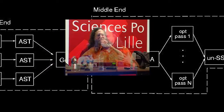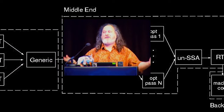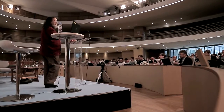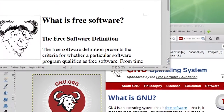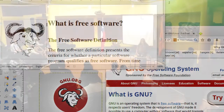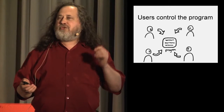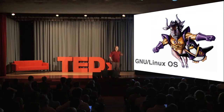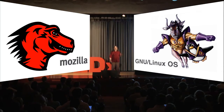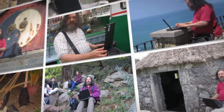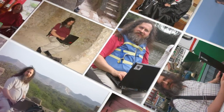Without the robust, free compiler at its core, developed by Richard Stallman, a completely free operating system would not have been possible. The GNU Compiler Collection is a cornerstone of the free software community, a key element in significant software such as the GNU Linux operating system and the Mozilla browser. It has supported hundreds of other software systems that together form the foundation of the modern Internet.